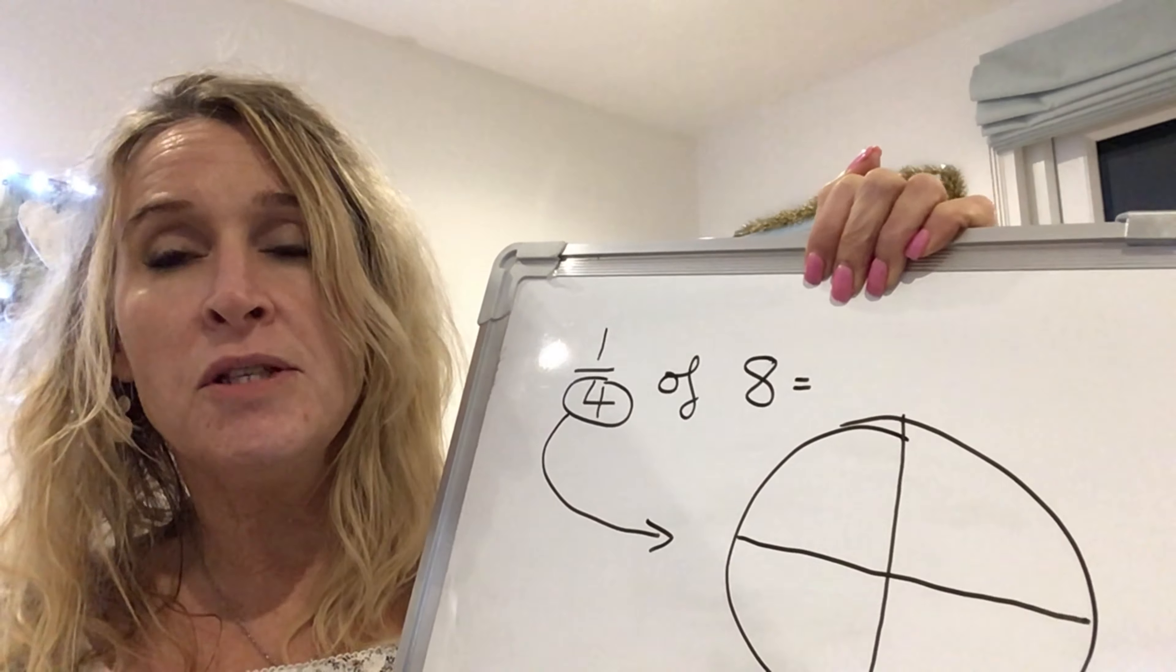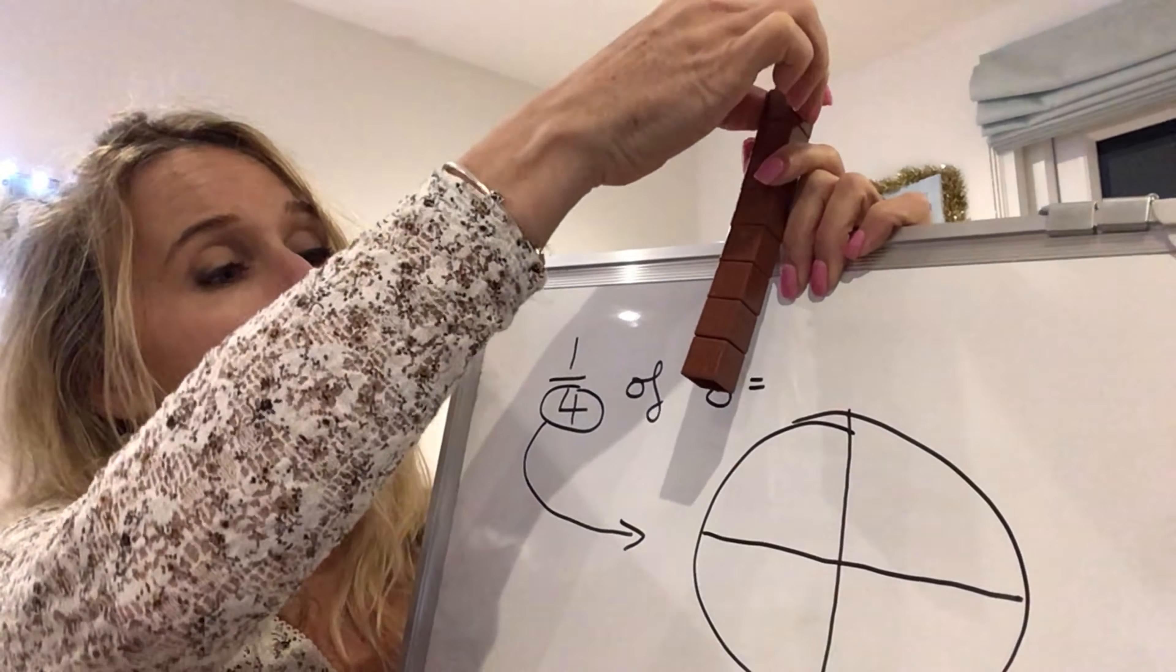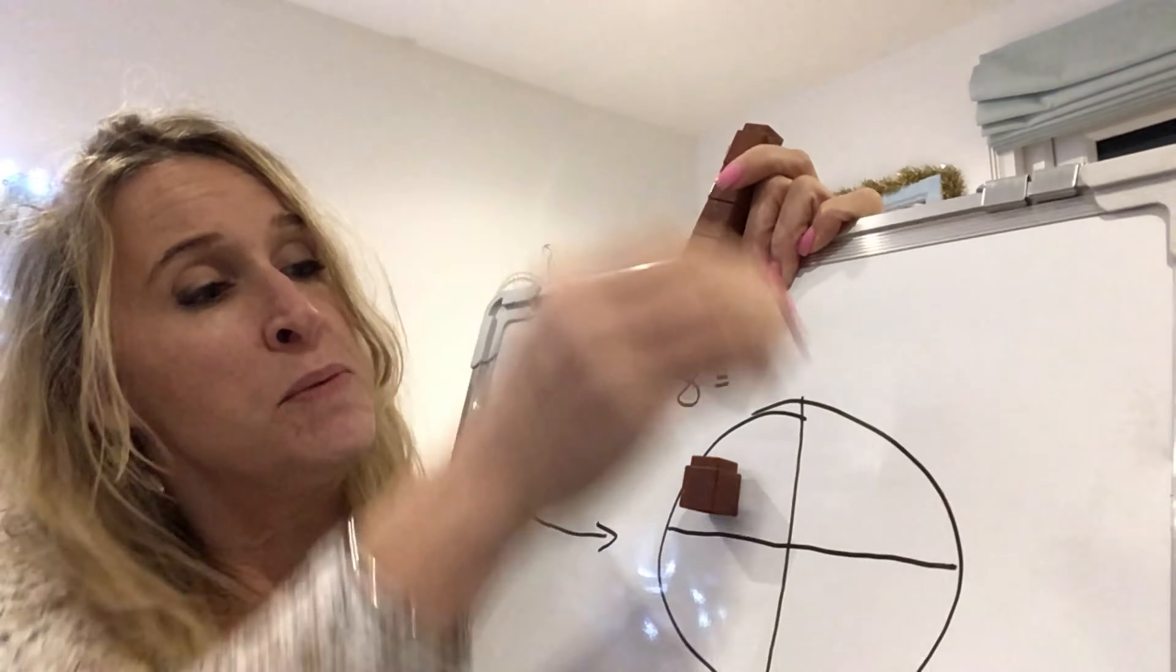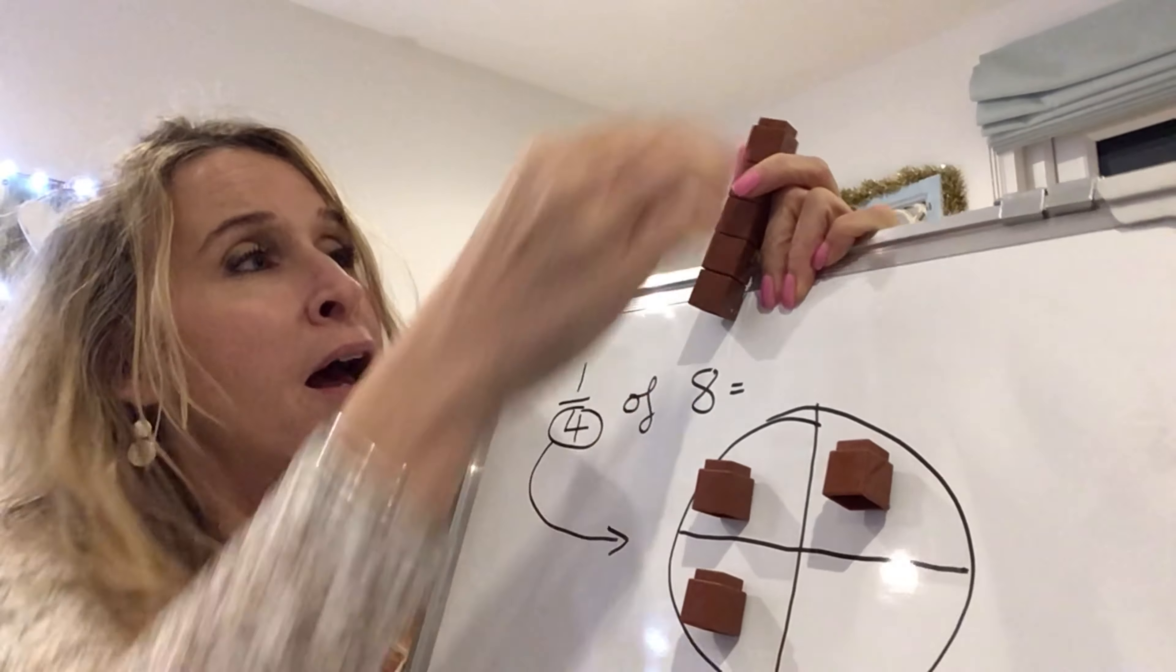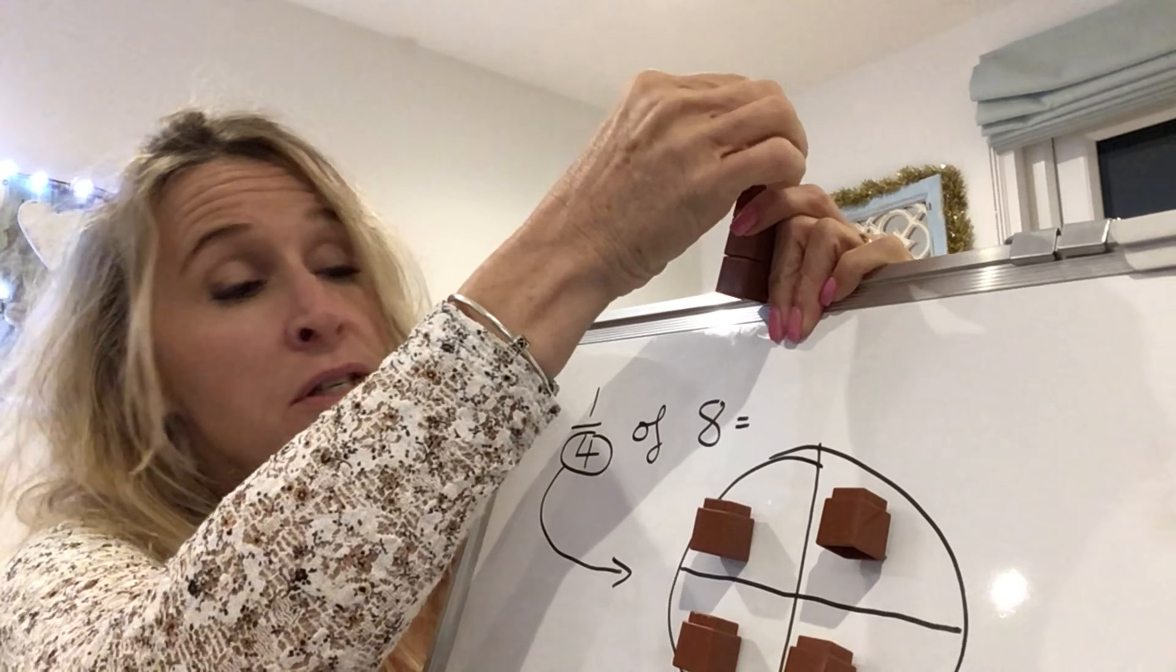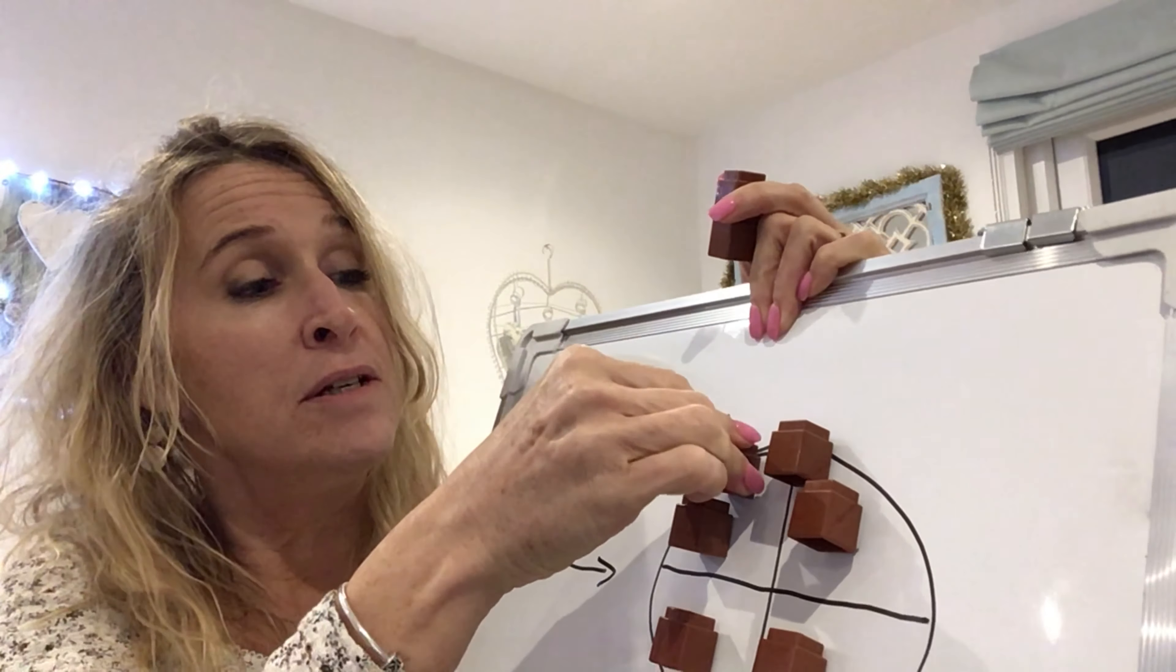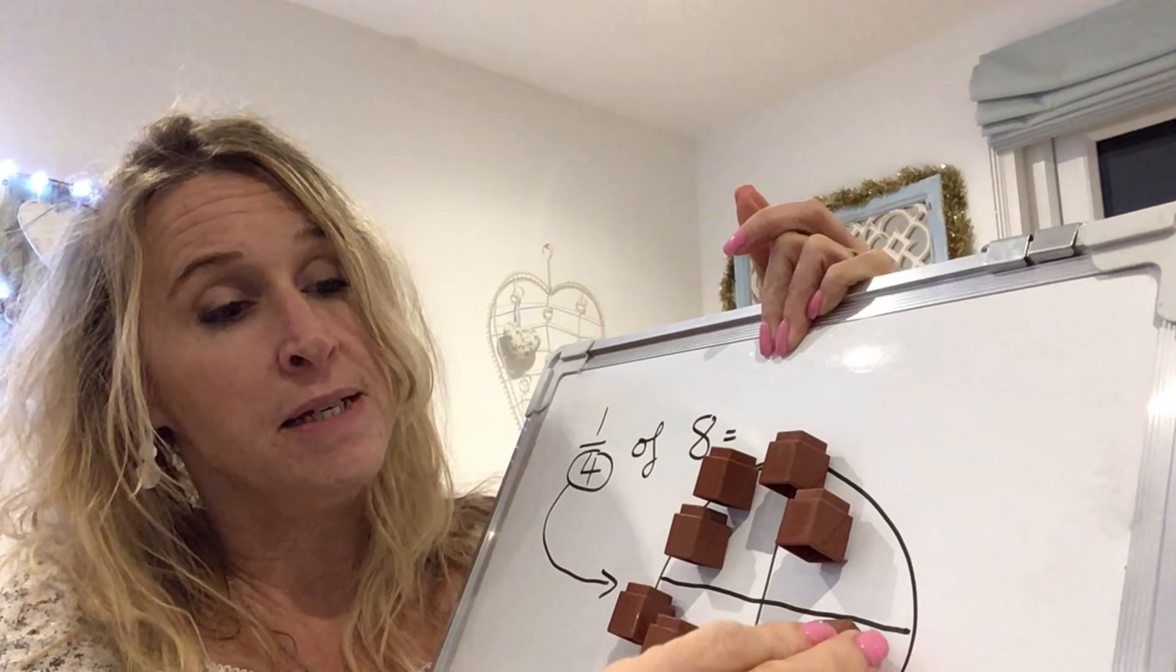And then what we can do is we can get eight objects. This is how we would start. And we would say, right, if we're going to find a quarter of eight, we're going to share eight cubes out between the four pieces. And sometimes you can pretend they're smarties on a cake and you want to divide the cake into four pieces. And you want to share the smarties equally between each piece.